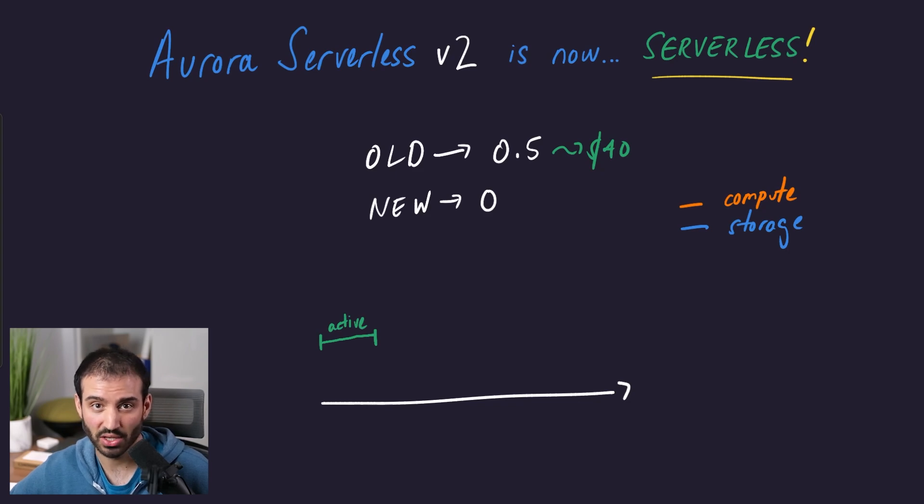Before Aurora pauses itself and scales down to zero, there's a period that it has to wait before it will do that. So this period here we'll call the wait period, and this is a configurable value. You can configure this to something between five minutes and 24 hours. This is a period of time that your database can wait with no activity before it shuts itself down or scales down to zero.